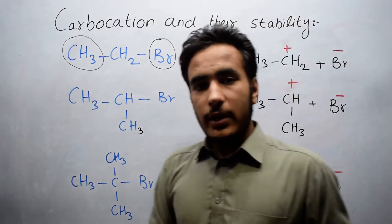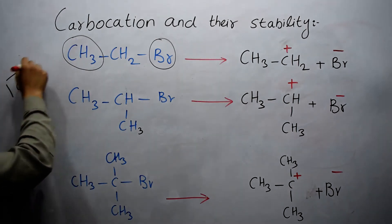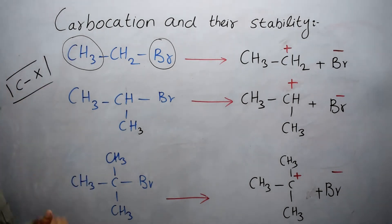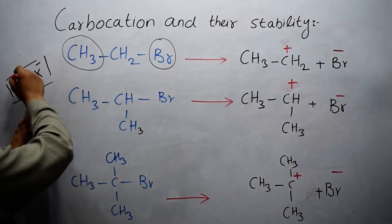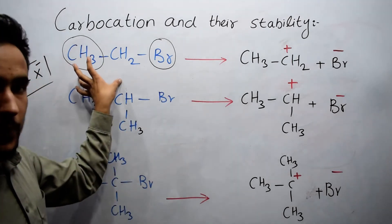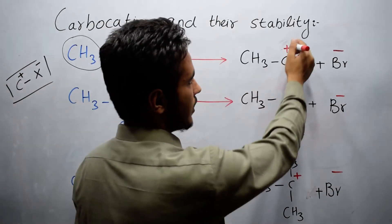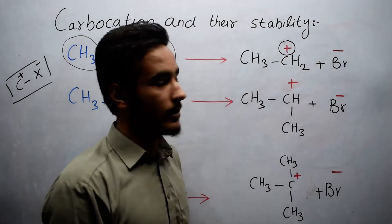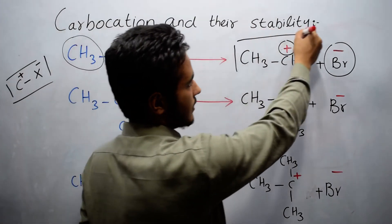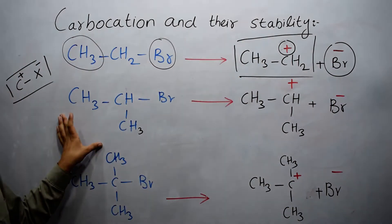The carbon–halogen bond is very polar because halogen is more electronegative than carbon. So a negative charge appears on the halogen and a positive charge on the carbon. If we supply bond energy to this compound, the bond breaks, giving us CH₃CH₂⁺ (positive charge on carbon) plus Br⁻. This ion is known as the primary carbocation.